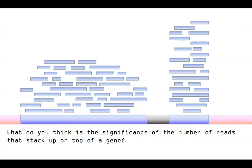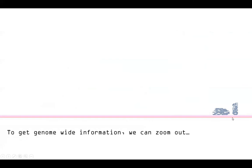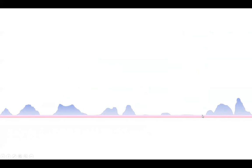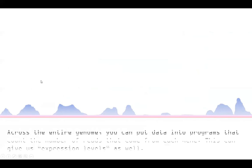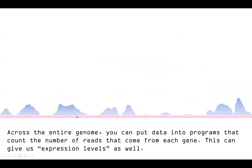So not only are we mapping reads back, ultimately we're going to want to be counting them as well. If we zoom out to the whole genome and merge the read data into a general shape, we can get more information. Across this whole genome, you'll get peaks where there was a lot of expression — a lot of reads mapped back — and flat valley areas where there were no reads or not much to speak of. This can be attributed to expression levels.